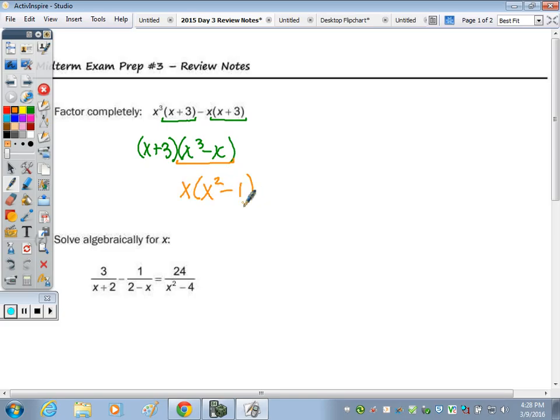x squared minus 1 is the difference of two perfect squares. So I want to take and factor this again, and that factors into x plus 1 times x minus 1.